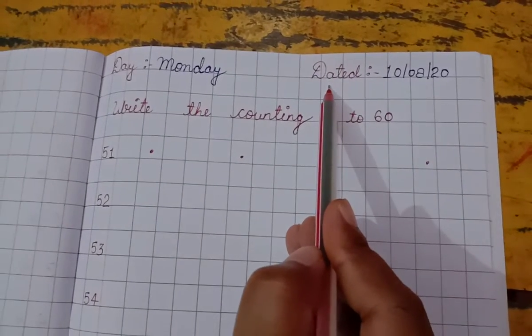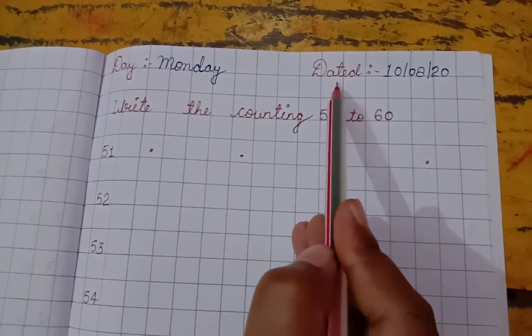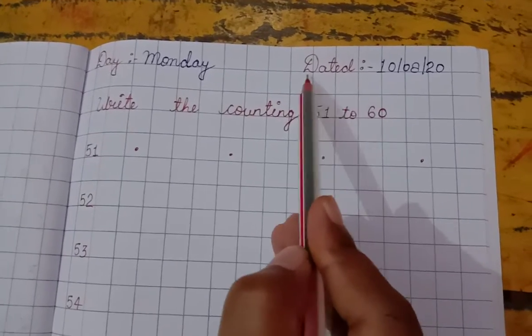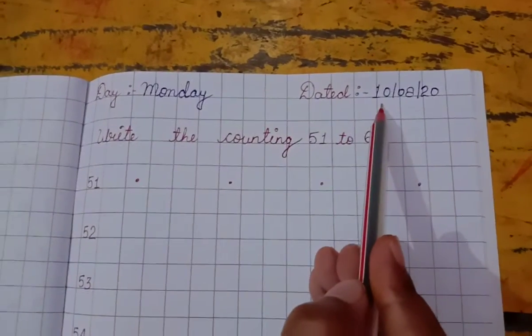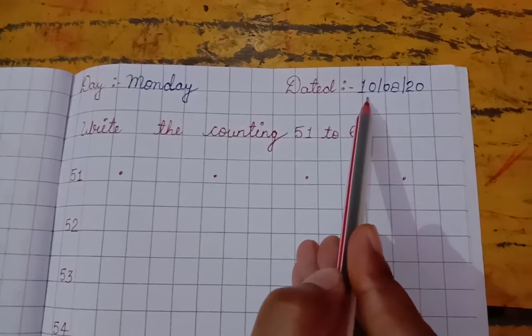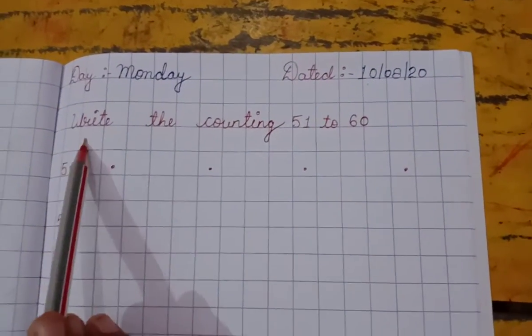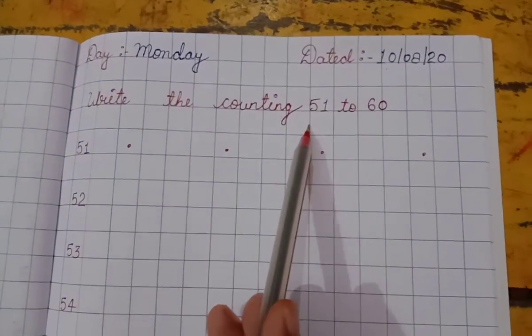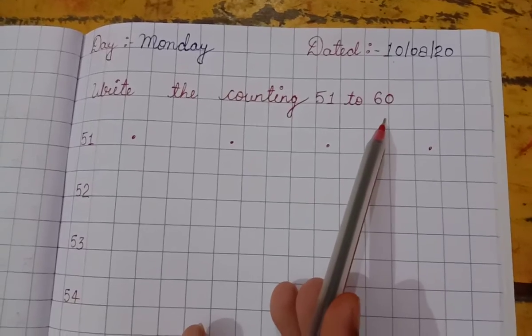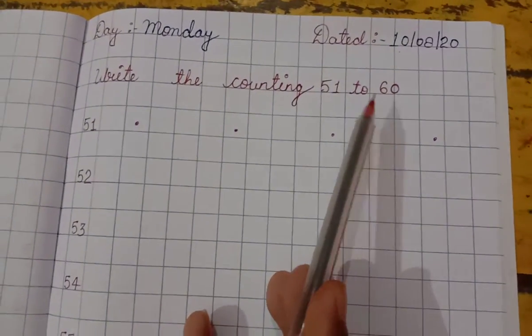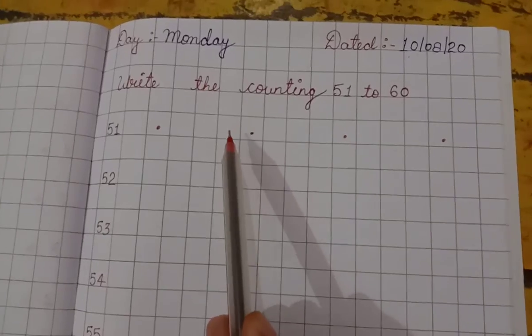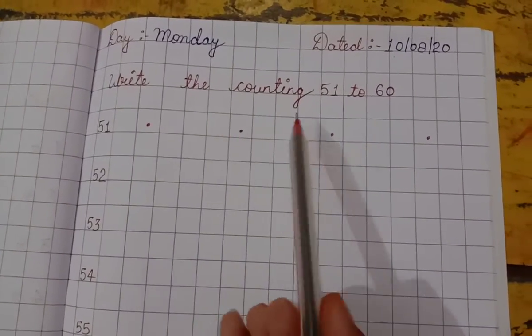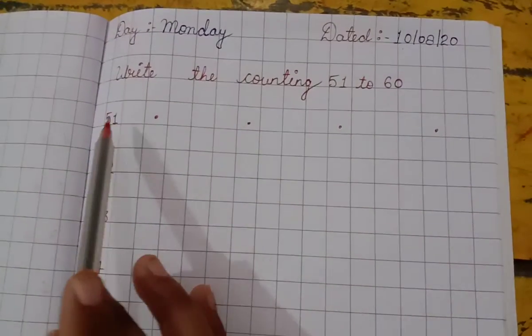Date, D-A-T-E, dated 10 August 2020. Write the counting 51 to 60. Aaj amro 51 to 60 counting read or write kareenge.